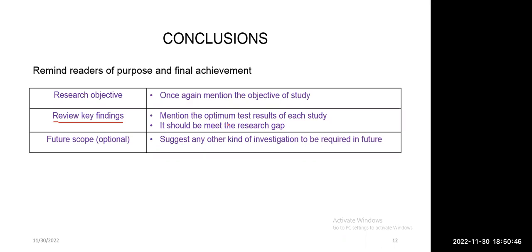Your conclusions must also match with the research gap. We had mentioned earlier that due to CO2 emanation there is a problem to the environment, that is why instead of cement I am using some other materials — that was the research gap. Now, you need to prove whether your research gap is fulfilled or not only with your experimental results, and that must be written very clearly in the conclusion section.